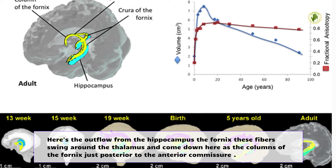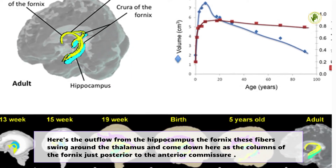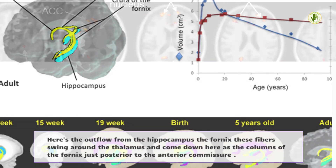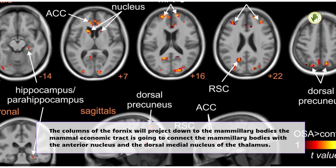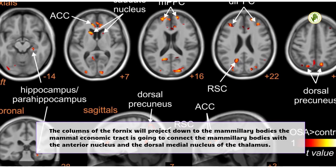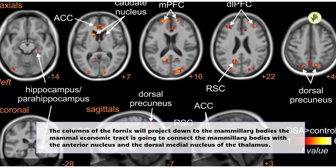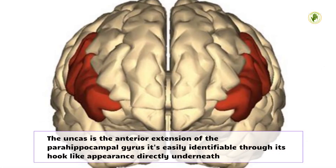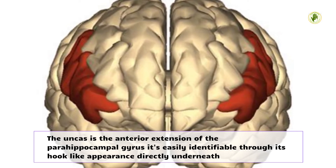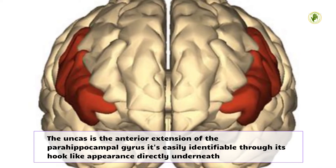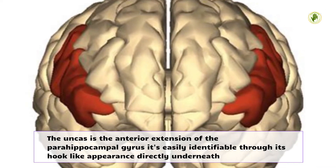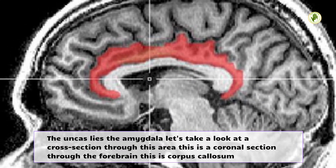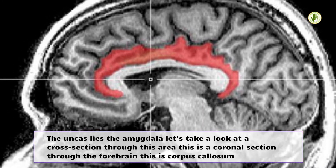Here is the outflow from the hippocampus — the fornix. These fibers swing around the thalamus and come down as the columns of the fornix, just posterior to the anterior commissure. The columns of the fornix project down to the mammillary bodies. The mammillothalamic tract connects the mammillary bodies with the anterior nucleus and the dorsal medial nucleus of the thalamus. The uncus is the anterior extension of the parahippocampal gyrus, easily identifiable through its hook-like appearance.